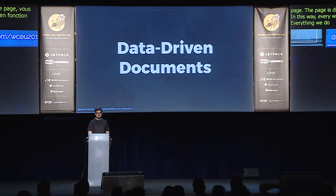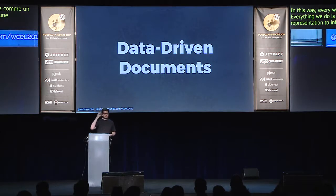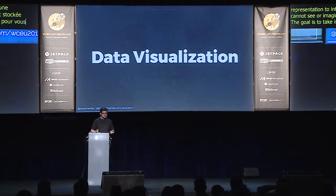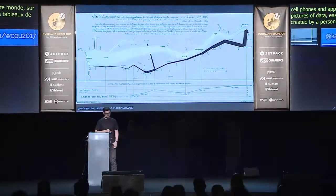Everything we do is giving visual, audio, or semantic representation to information that is abstract and stored somewhere that we cannot see. The goal of data visualization is to take that complex information and represent it visually to let you learn things about it that you might not have known. Data viz — the hip way to refer to data visualization — is all around us. Charts, graphs, and interactive graphics are everywhere: on metro signs, buses, cell phones, apps, dashboards, and boardrooms. Every chart we see was created by a person for a reason — in a way, it's a storytelling mechanism.